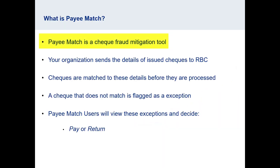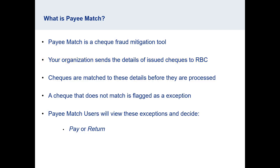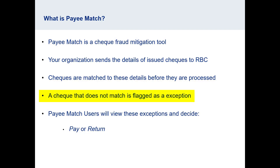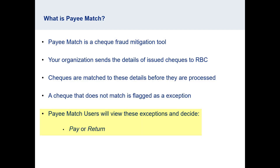Payee Match is a check fraud mitigation tool. Your organization will send the details of issued checks to RBC. The checks presented against your account are matched to these details before they are processed. If a check is presented that does not match the details, it is flagged as an exception.